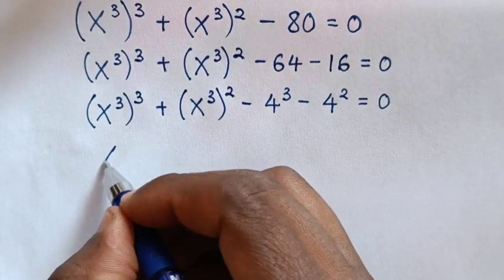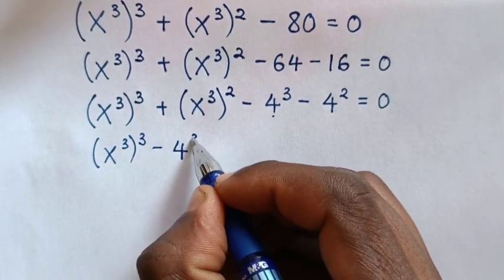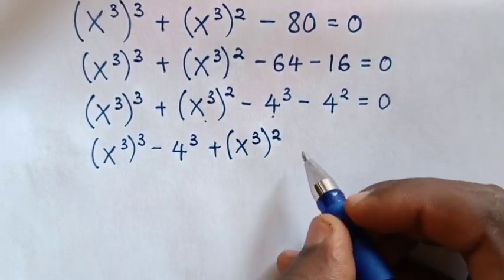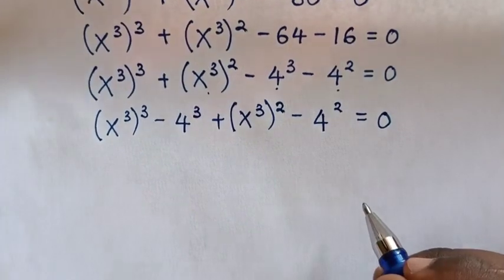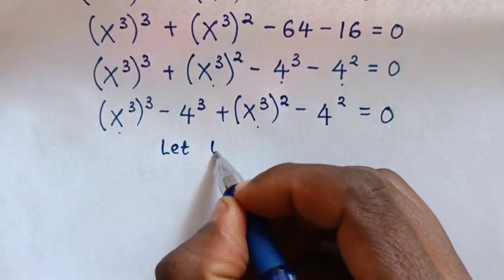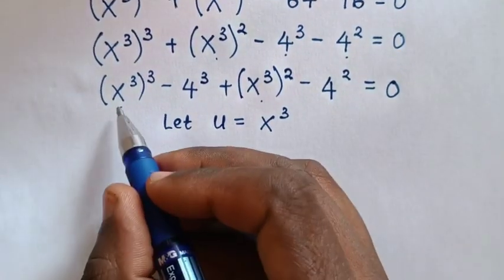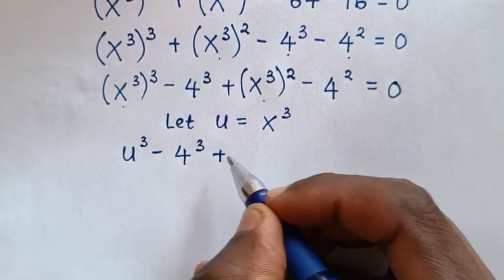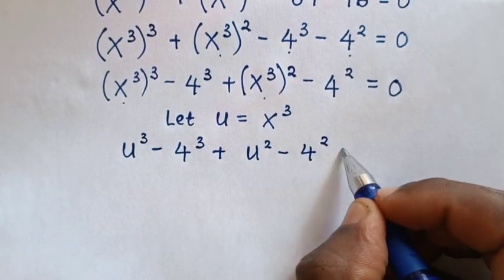So the expression becomes (x³)³ minus 4³ plus (x³)² minus 4² equals 0. At this point, x³ is common, so we let u equal x³. The equation becomes u³ minus 4³ plus u² minus 4² equals 0.